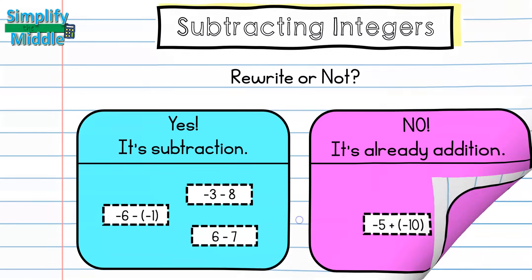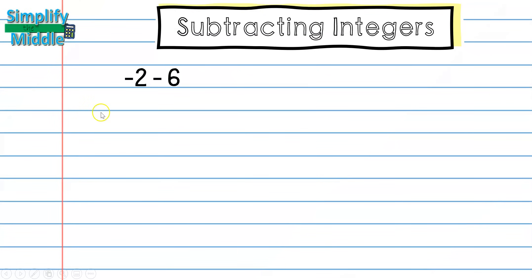Our first question is negative 2 minus 6. We want to think about subtracting integers as we are always going to be doing addition. So we just need to turn this into an addition problem, and then we don't have to worry about what to do for subtracting integers.